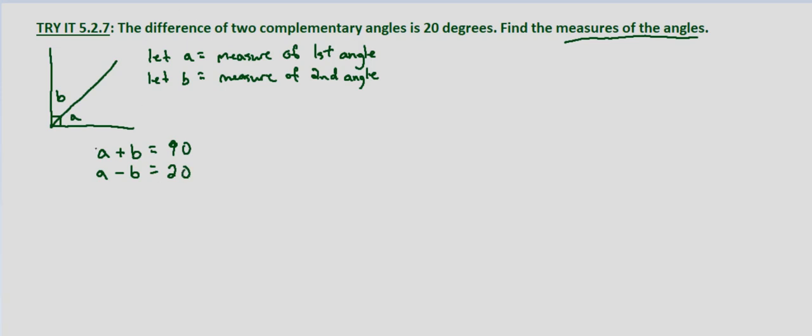So here's our system of equations, A plus B equals 90, and A minus B equals 20. So how are we going to solve the system of equations? Well, since B and negative B are already part of these equations, let's just add them.